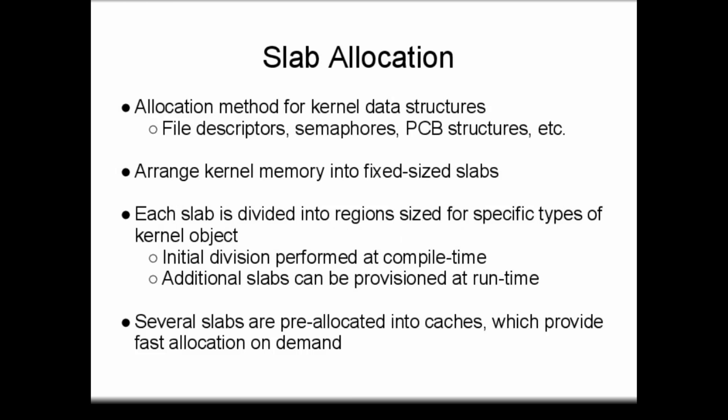The power of two methods are useful for allocating memory to processes, where some internal fragmentation is acceptable. However, within the kernel, it is preferable to minimize both internal and external fragmentation to avoid wasting space. This conservative approach is needed since the kernel is always mapped into main memory. An efficient solution for allocating kernel memory is to use a slab allocation algorithm, in which kernel memory is arranged into fixed-sized slabs. Each slab is divided into regions sized for specific types of kernel objects, including file descriptors, semaphores, process control structures, and other internal data structures. Initial layout of these slabs is performed at compile time. At runtime, several of each of the different slab layouts are pre-allocated into caches. Whenever the kernel requires a new data structure, space is simply taken from the slab cache. If the slab cache starts to run out of a certain slab layout, it automatically provisions extras.